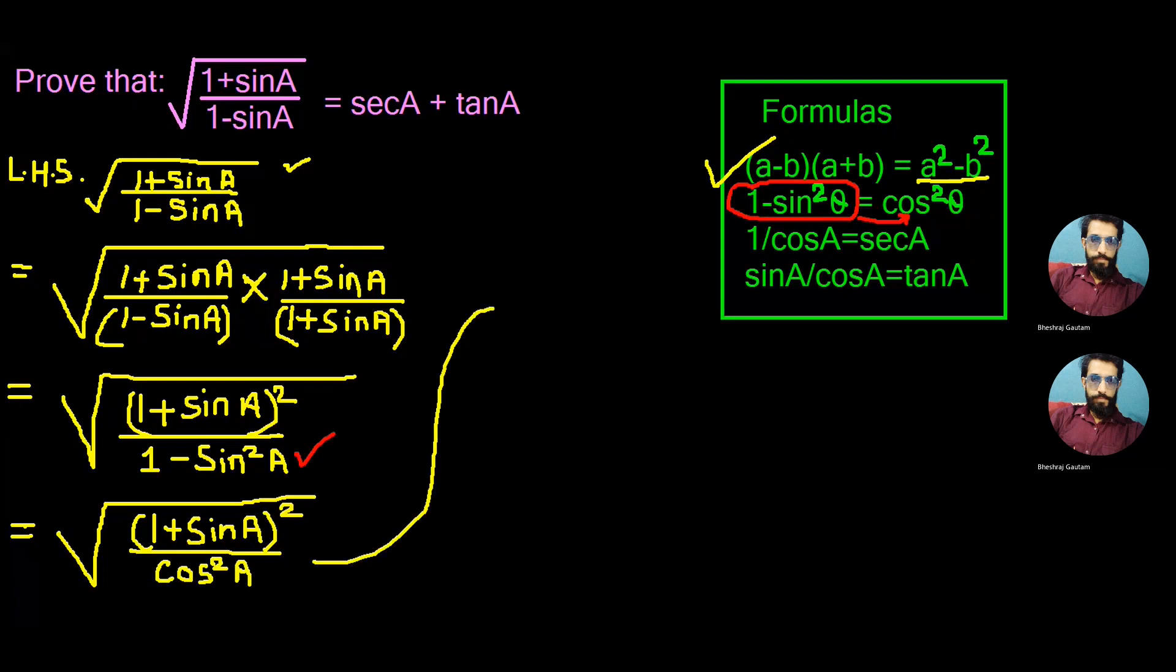So here we see both numerator and denominator has a square, so let's take the power common here and write our fraction as one plus sin A whole divided by cos A whole square.